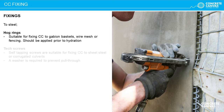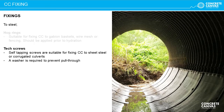Pneumatic or manually applied hog rings can be used to attach CC layers to gabion wire baskets or security fencing. As with most fixings, these should be applied prior to hydration. When fixing CC to a steel substrate, as in the case of culvert repair, tech screws and washers offer a quick installation process. All fixings should have a minimum washer or head size of 15 mm to prevent pull through.